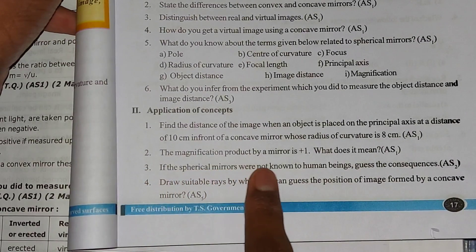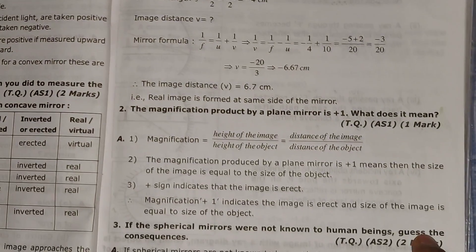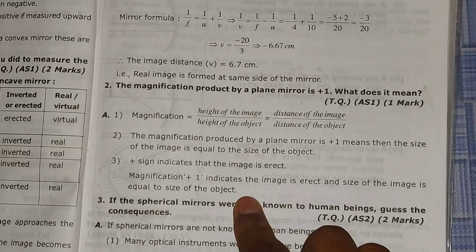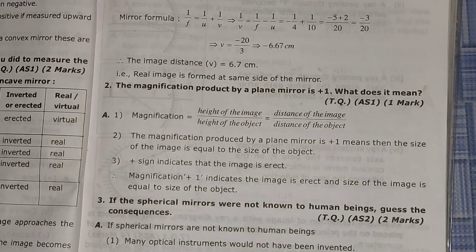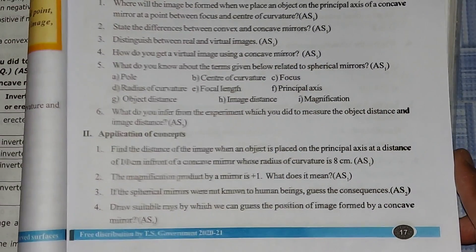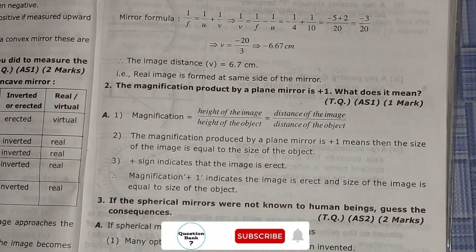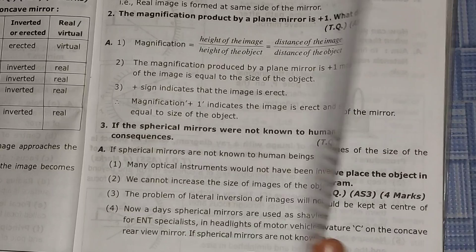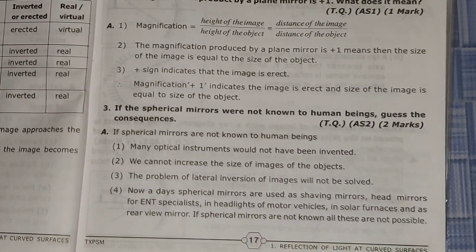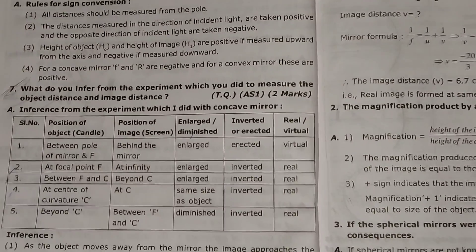Now we'll go to the second question — you can see the second question in the textbook. Now we'll see the second question answer in the question bank — you can see it here. Moving on to the third question, you can see it in the textbook. The third question answer in the question bank is shown up to here.